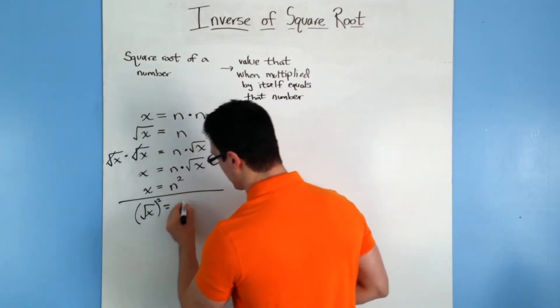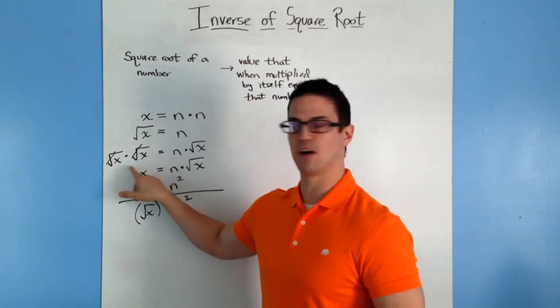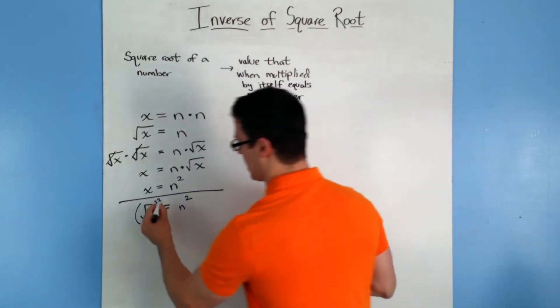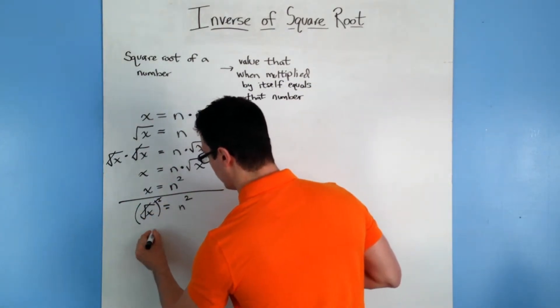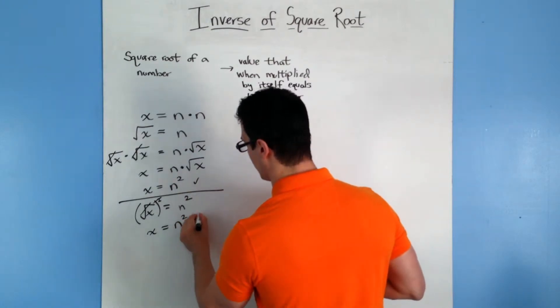So I can square this side, square this side. If you take the square root of x squared, it's the same thing as multiplying it by itself up here. So you'll end up with n squared just the same. So the square root cancels, and you end up with x is equal to n squared, which is what we have here and what we have here.